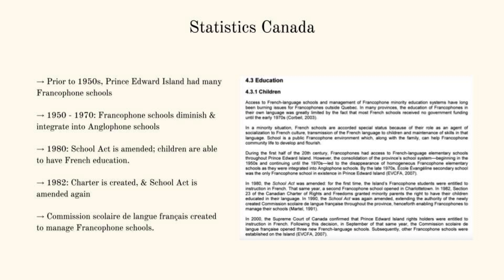According to Statistics Canada, in the early 1900s, there were many Francophone schools that existed in Prince Edward Island. However, between the 1950s to late 1970s, Francophone schools diminished and integrated into anglophone schools. The only Francophone school that existed was École Évangéline Secondary School. The School Act of PEI was then initially amended in 1980, entitling children to education in French. In 1982, the Canadian Charter of Rights and Freedoms was created, which encompassed Section 23, Minority Language Rights. The School Act was then amended again, extending further rights for Francophone education in PEI and allowing Francophone communities to manage their own schools through the Commission Scolaire de Langue Française.